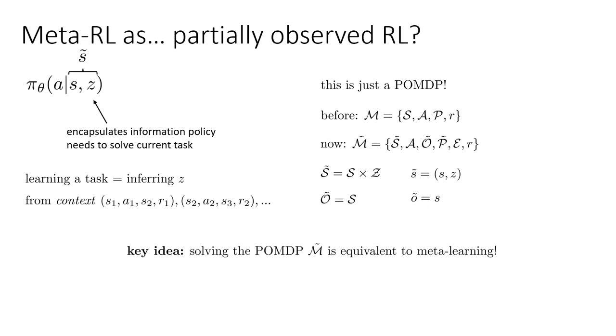So the key idea is that solving this POMDP M tilde is equivalent to meta-learning. Because if you can get a very high reward in this partially observed Markov decision process, where the state is observed but the task isn't, then you will be able to solve a new task just from the observations of the state and the reward.